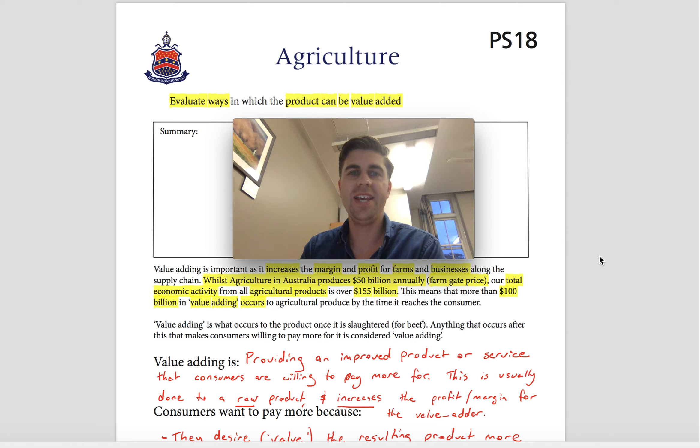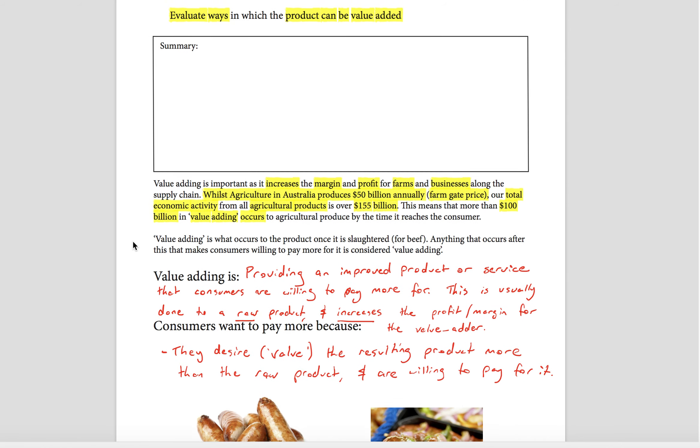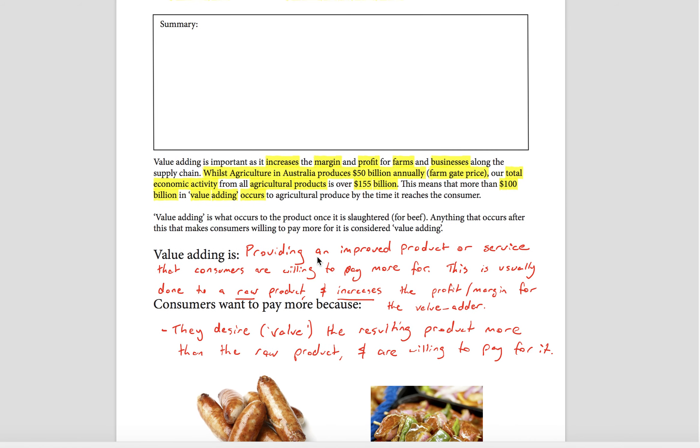Alright, welcome to dot point PS18. This dot point is about evaluating ways which the product can be value-added. First of all, we should talk about what value-adding is. It's basically providing an improved product or service that consumers are willing to pay more money for, and this is usually done to the raw product.